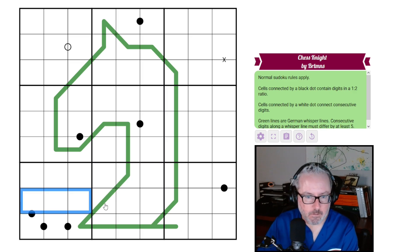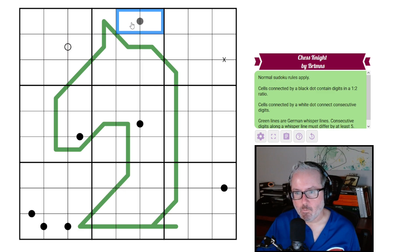Chess Knight by Bartman. I've got normal Sudoku rules, so every row, column, and three by three box will contain the digits one through nine once each. Cells connected by a black dot contain digits in a one to two ratio. Cells connected by a white dot connect consecutive digits. So that's kropki.